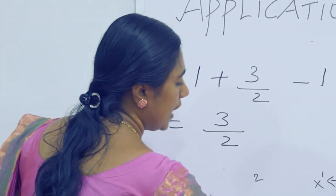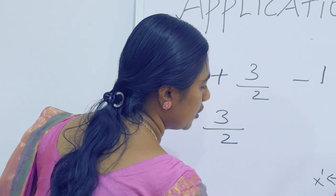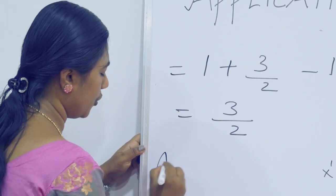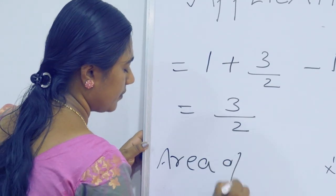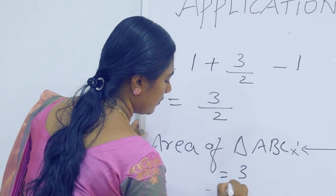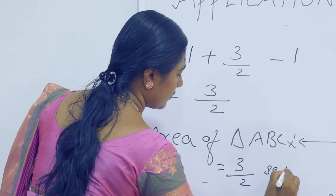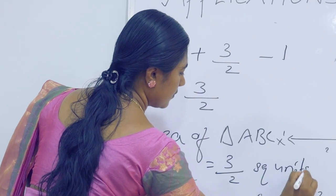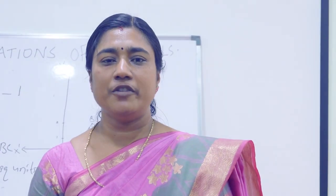Therefore, area of triangle ABC equals 3/2 square units. So, I hope everyone should understand how to find area of triangle using integration. Thank you.